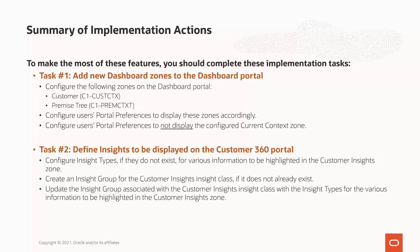The reason for this is that the new Customer and Premise Tree dashboard zones are meant to replace the configured current context dashboard zone. Next, you define the possible insights or information to be highlighted on the Customer 360 portal. There are several insight types already provided. To highlight additional insights, you can configure new insight types to meet your business needs. You must also configure an insight group for the Customer Insights Insight Class if one does not already exist.